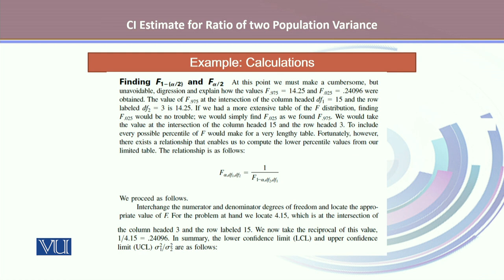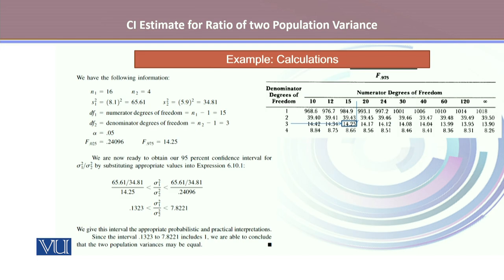Likewise, for value F alpha by 2, it turned out to be 0.24096. Using these values and calculating the confidence interval estimate, it turned out to be the confidence interval estimate for the ratio of two variances is 0.1323 and 7.8221 as the lower confidence limit and upper confidence limit respectively, which gives us the interval appropriate probabilistic and practical interpretation.